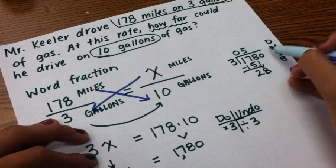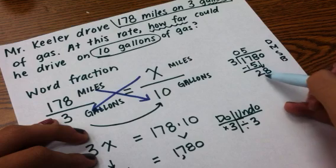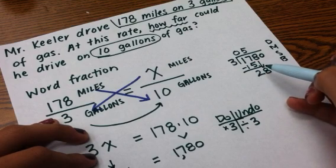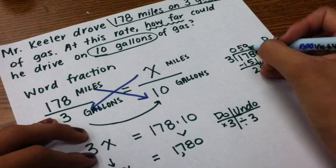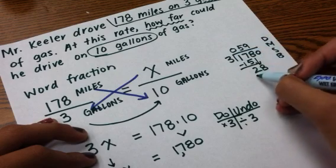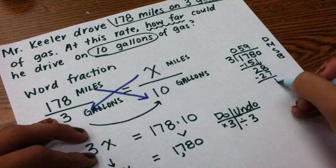So, now, I'm going to divide again. I'm back at the top. 3 goes into 28. Let's see. It goes in about 9 times. Nope. Yes. 9 times. 9 times 3 is 27. 1.